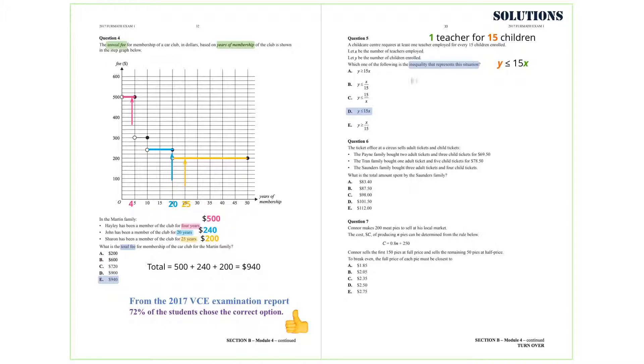From the 2017 VCE examination report, 31% of the students chose the correct option, with 69% of the students choosing one of the incorrect options.